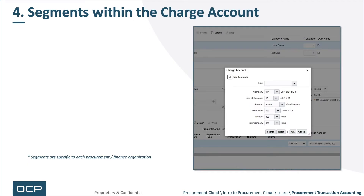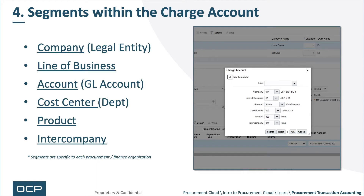Within the Charge Account there are different fields, segments, or chart fields if you come from a PeopleSoft world. For example, there's a Company (legal entity), a Line of Business, a GL account (also called a natural account), a Department or cost center, Product, and Intercompany for back-and-forth transactions. These are called segments — in PeopleSoft they were called chart fields and rolled into a string; here it's simply called the Charge Account.